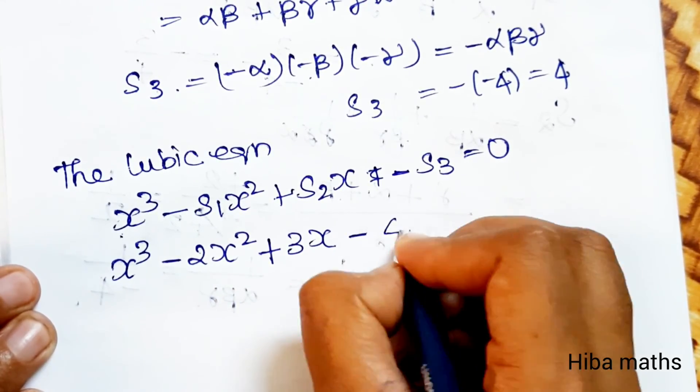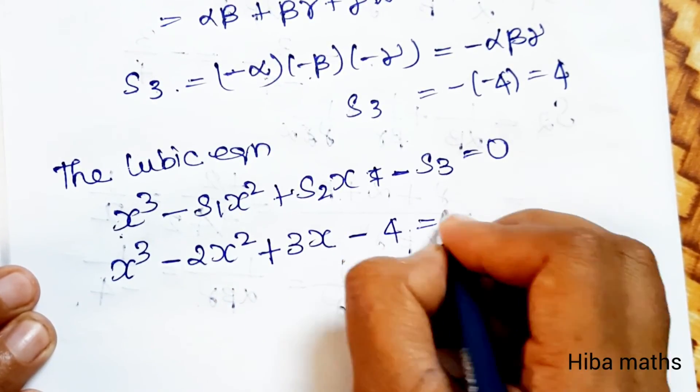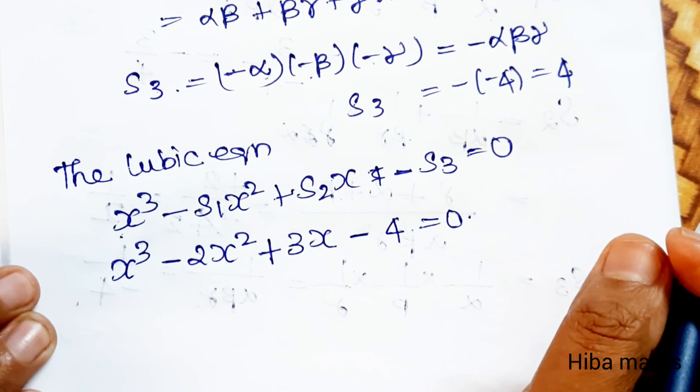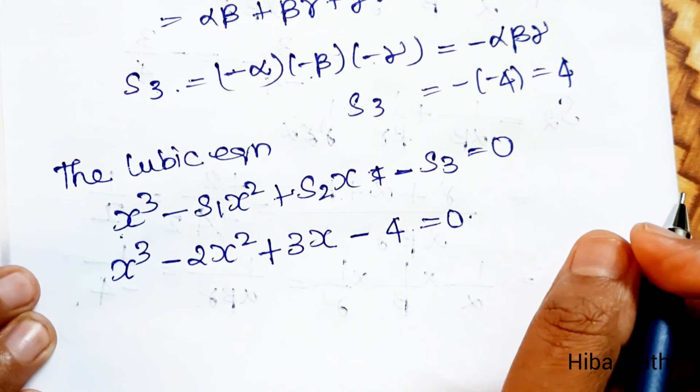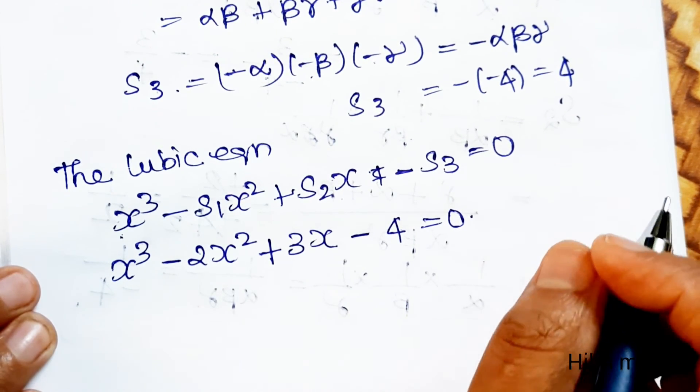The cubic equation is x³ − 2x² + 3x − 4 = 0. That's the answer. I hope it's easy to understand. Thank you so much for watching.